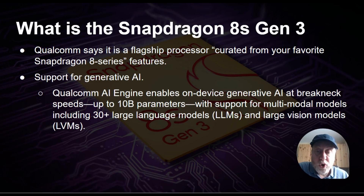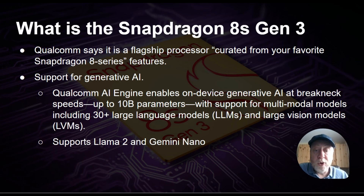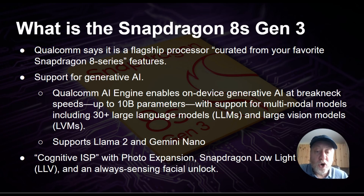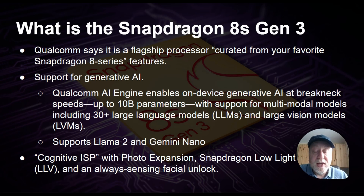It supports generative AI. Qualcomm's AI engineering enables on-device generative AI at breakneck speeds. There are 10 billion parameters with support for multi-modal models, including 30-plus large language models and large vision models. It supports Llama 2 and interestingly Gemini Nano. It also has the cognitive ISP, which allows for photo expansion, Snapdragon low-light vision, and always-sensing facial unlock — combining neural processing, machine learning, and direct camera integration.